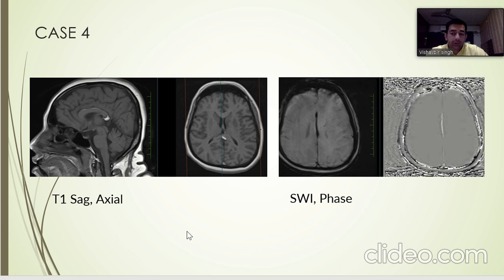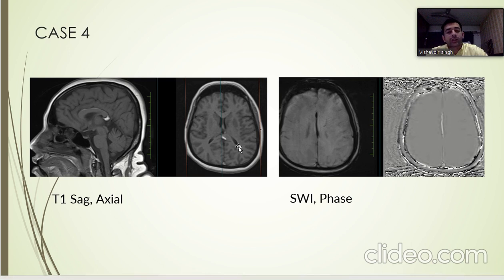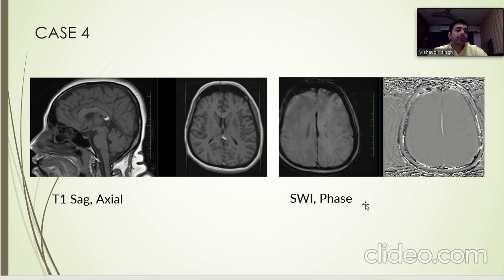In Case 4, we can see T1 weighted hyperdensity along the corpus callosum and in relation to the splenium. The same on axial section can be seen in the corpus callosum region. It shows signal dropout on SWI images and correspondingly bright images on phase.